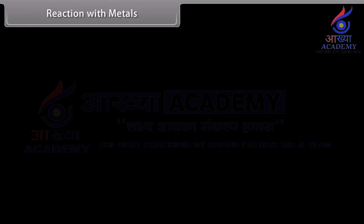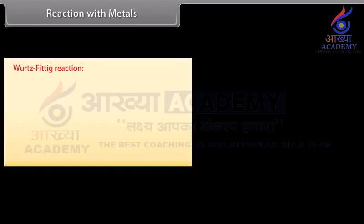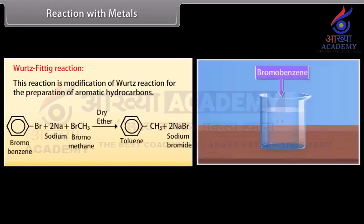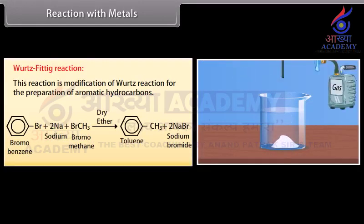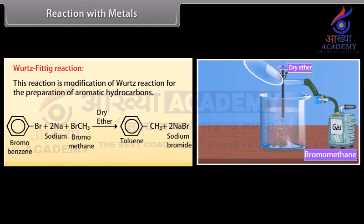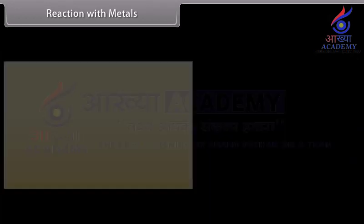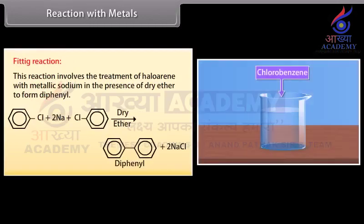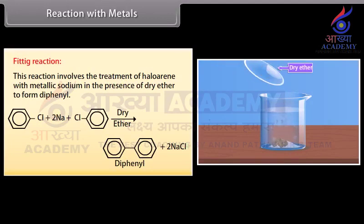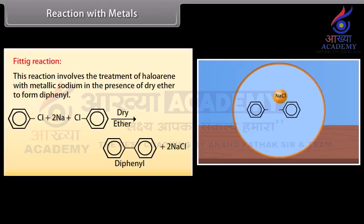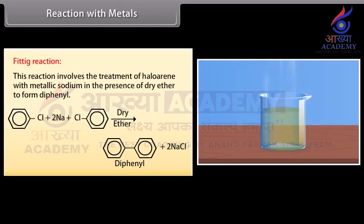Reaction with metals — Wurtz-Fittig reaction: this reaction is a modification of the Wurtz reaction for the preparation of aromatic hydrocarbons. In a solution of bromobenzene, sodium and bromomethane are added in the presence of dry ether, which reacts to give toluene and sodium bromide. Fittig reaction: this reaction involves the treatment of a haloarene with metallic sodium in the presence of dry ether to form diphenyl. Sodium is added to a chlorobenzene solution with dry ether, which reacts to form diphenyl and sodium chloride.